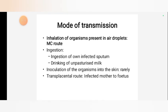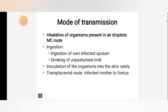Mode of transmission of pulmonary tuberculosis: first, inhalation of organisms present in air droplets; most common route is ingestion of undigested sputum; drinking of unpasteurized milk; inoculation of the organism into the skin; rarely transplantation route; and infected mother to fetus.